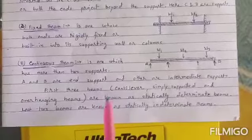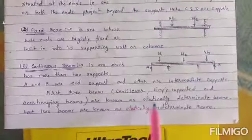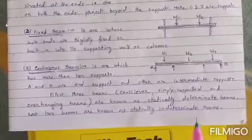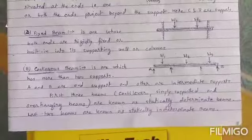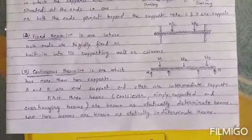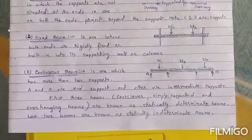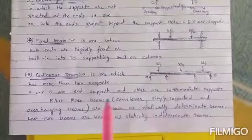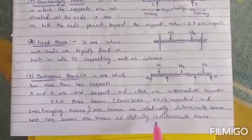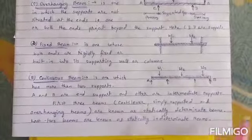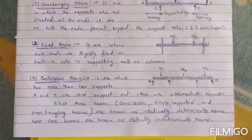The first three types — cantilever, simply supported, and overhanging beam — are known as statically determinate beams. These can be solved using equilibrium equations as we studied in Chapter 4. The fixed beam and continuous beam are known as statically indeterminate beams, and their solutions are not covered here.